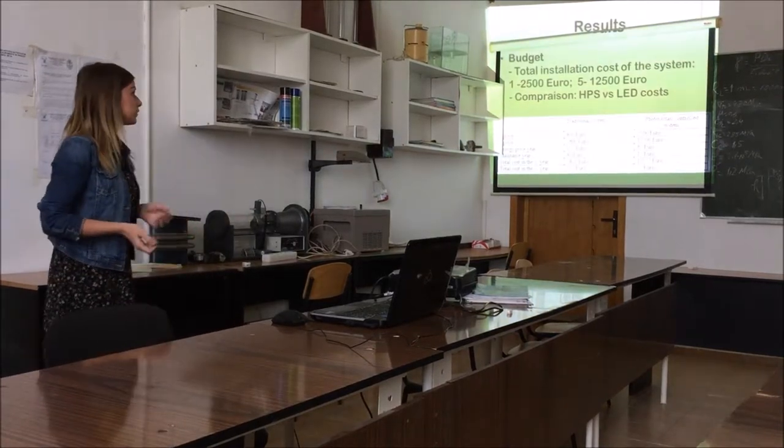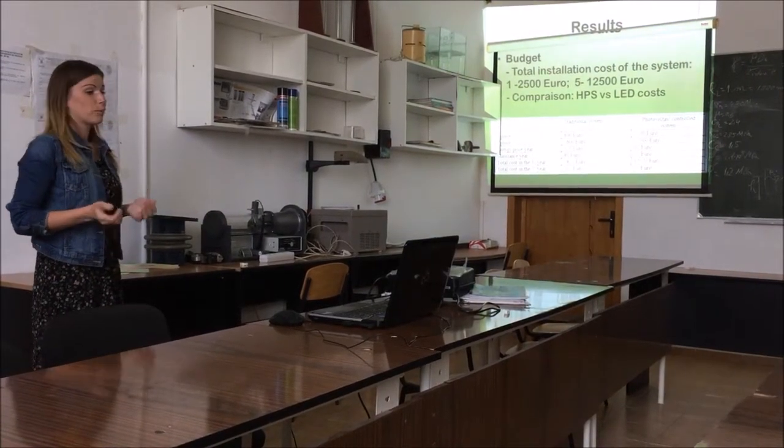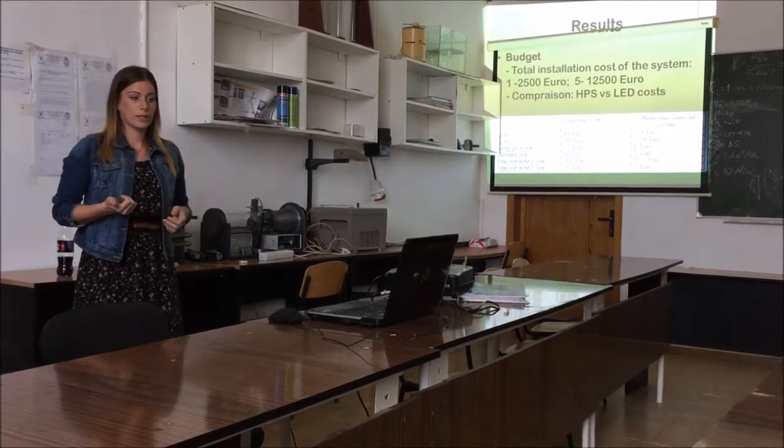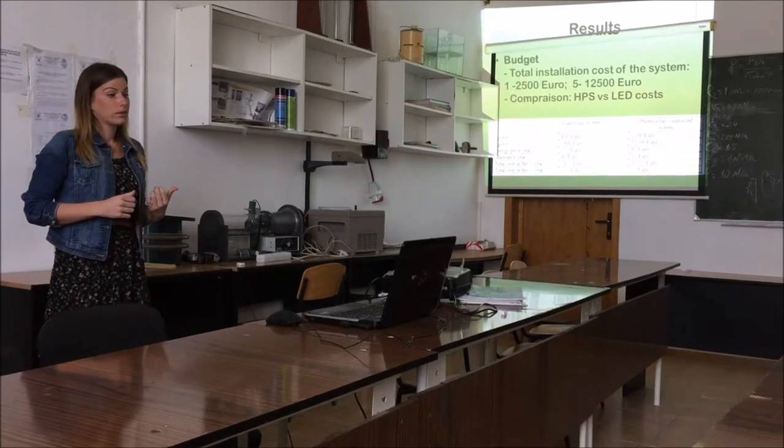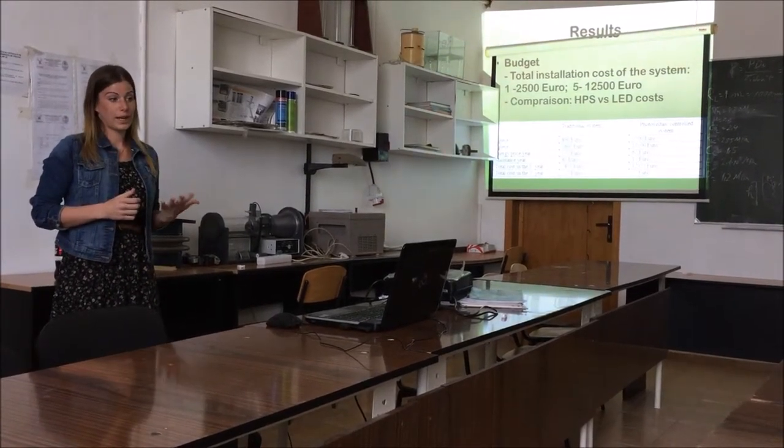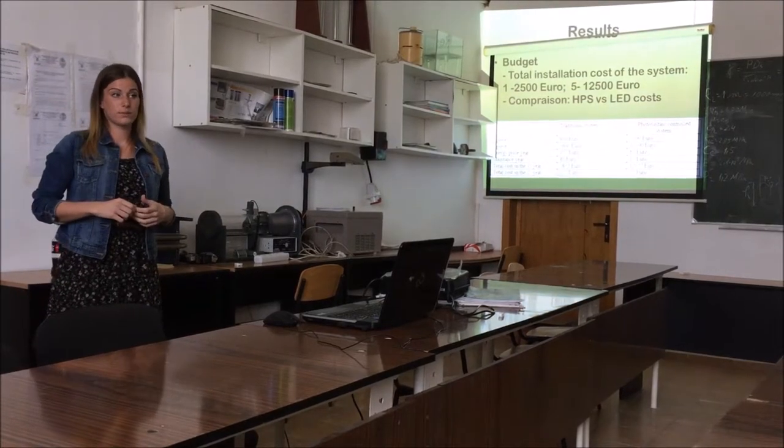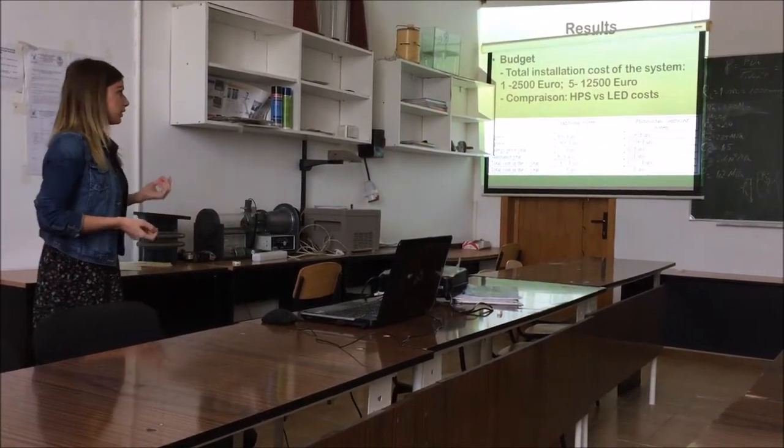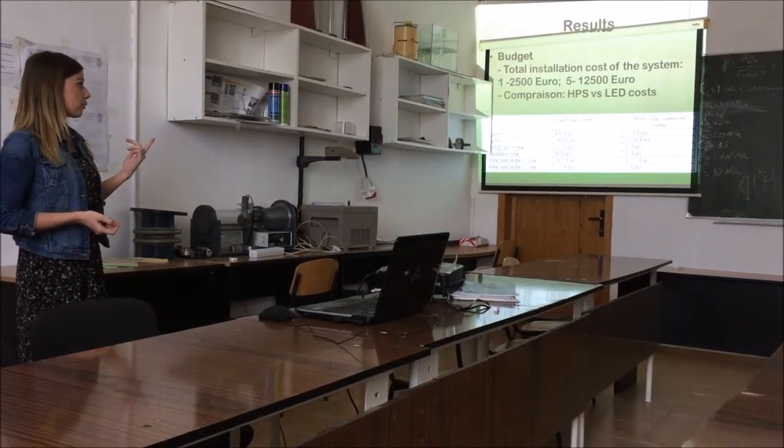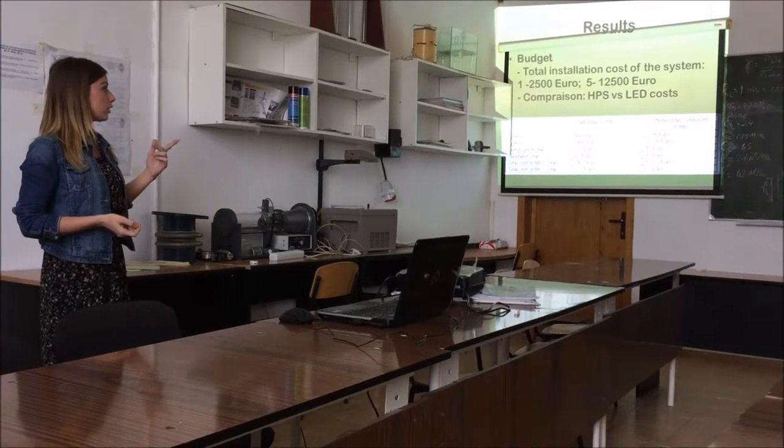And this is also the budget, the total installation cost of the proposed system. One pole costs €2000 and every piece together, five pieces, totals €12,500. So I made the comparison with the traditional light, which is the sodium lamp cost.